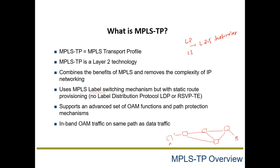In an IP network transporting from point A to point B, the routing table of each node or router must be updated to find the path to the destination. This routing table update takes a lot of time and consumes memory and CPU resources. Label switching is used to reduce that overhead.